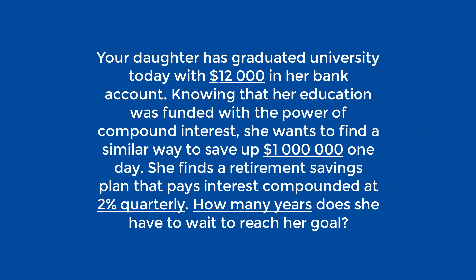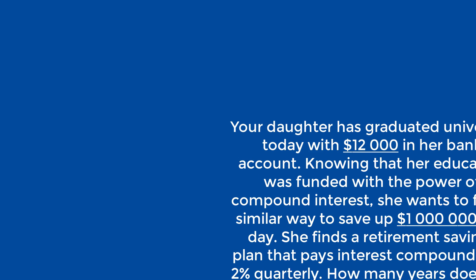Your daughter has graduated university today with $12,000 in her bank account. Knowing that her education was funded with the power of compound interest, she wants to find a similar way to save up $1 million one day. She finds a retirement savings plan that pays interest compounded at 2% quarterly. How many years does she have to wait to reach that goal?